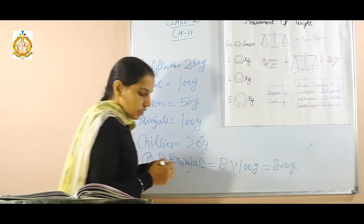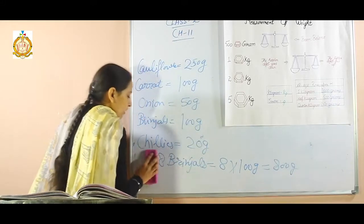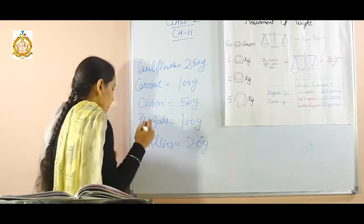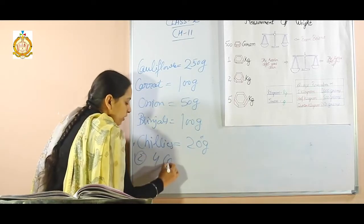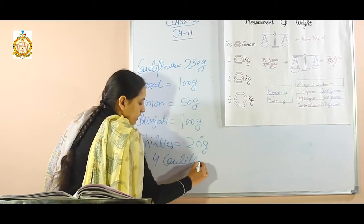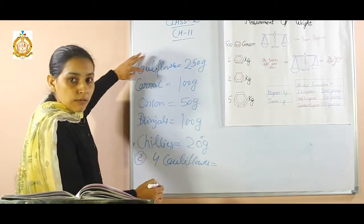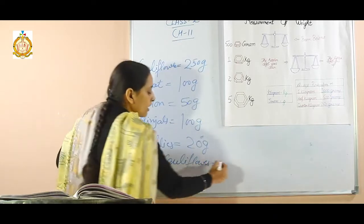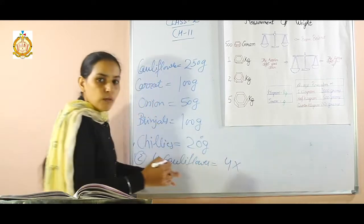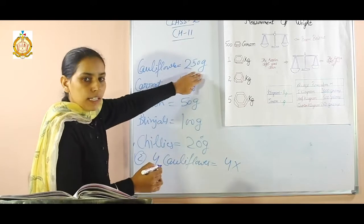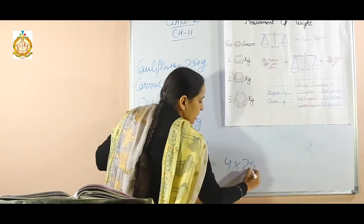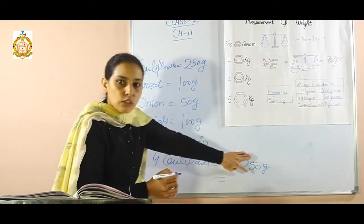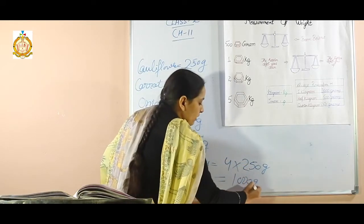Students, in the second sum, you have to find out the weight of 4 cauliflowers. What is the weight of 1 cauliflower? That is 250 gram. And to find out the weight of 4 cauliflowers, multiply 4 by 250. You will get 1000 gram.